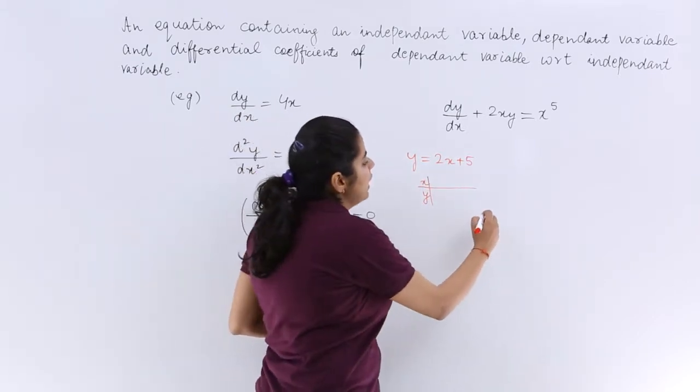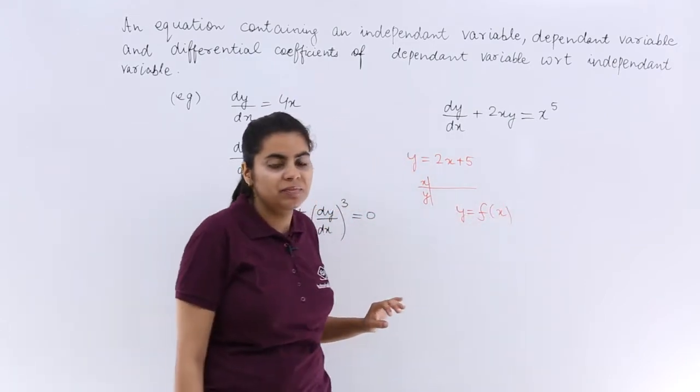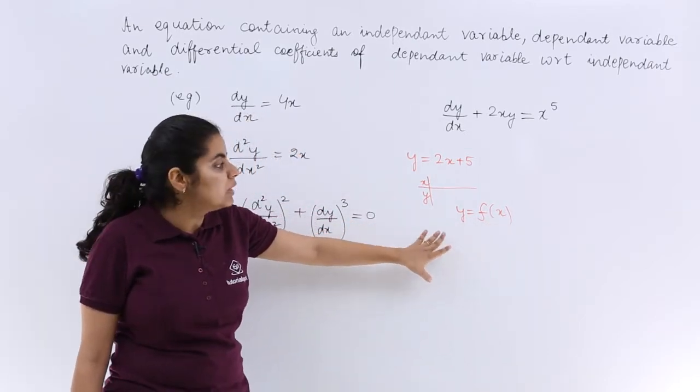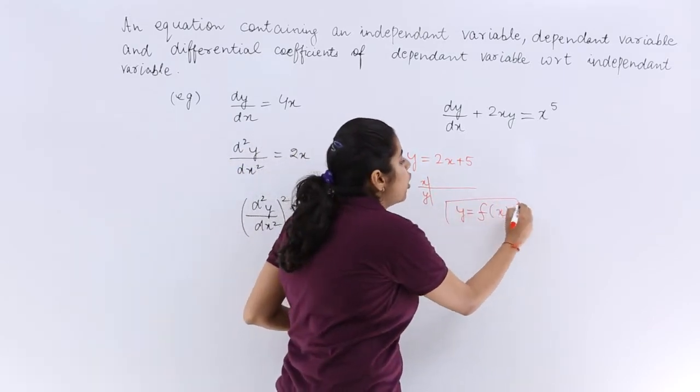Now see, if I have a function y equals f of x, different values of x will give me different values of y, because y is a function of x.